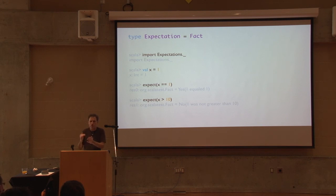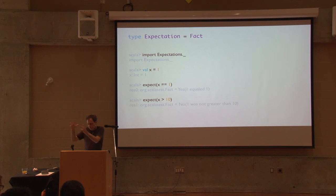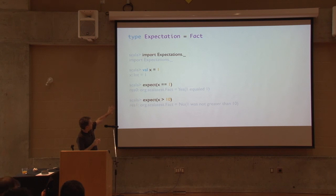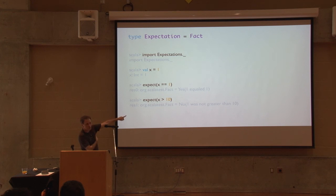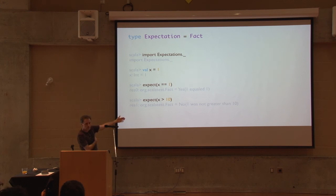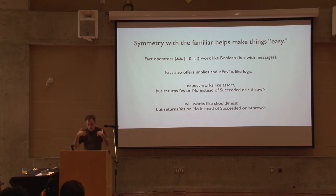Throwing exceptions from asserts works really well for tests because you usually want to fail fast and you want a stack trace anyway. But for laws - for defining laws - it's kind of annoying. So a few years ago I had an 'expect' - I deprecated it so I could re-bring it back to be a kind of assertion that doesn't throw an exception, it returns a result. So for every 'assert something' there's an 'expect something' now in this branch. The difference is assert x equals one returns Succeeded. But expect x greater than ten - instead of throwing TestFailedException - just returns No: 'one was not greater than ten.' What yes or no is, is a Fact - either Yes or No. It's like Boolean is either true or false, and it has the same operators.